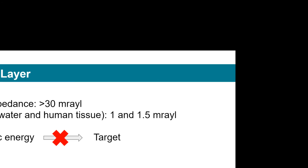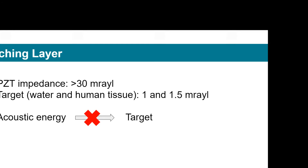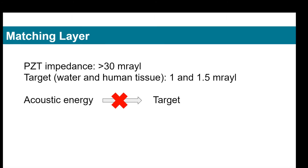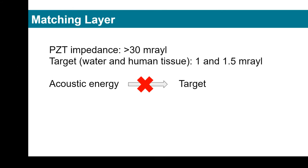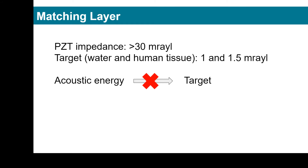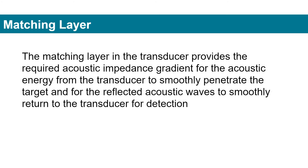Transducers are based on PZT ceramic or single crystal material, which have a high acoustic impedance above 30 MRayl. Targets such as water and human tissue have much lower impedance of 1.5 MRayl and 1.7 MRayl correspondingly. If we use the PZT transducer directly on the target, the acoustic energy will only be reflected on the surface of the transducer and not penetrate the target. Therefore, we need matching layers in the transducer to provide the required acoustic impedance gradient, for the acoustic energy to smoothly penetrate the target, and for the reflective acoustic waves to smoothly return to the transducer for detection.